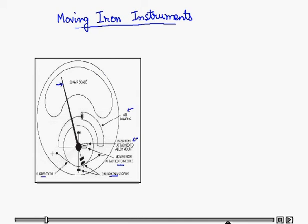Now the basic principle of an attraction type moving iron instrument is that when a soft iron piece is placed in the magnetic field of a current carrying coil, it is attracted towards the center of the coil. This is because the iron piece tries to occupy a position of minimum reluctance. Thus a force is exerted on the soft iron piece and deflection in the needle takes place.